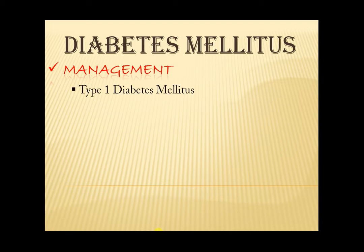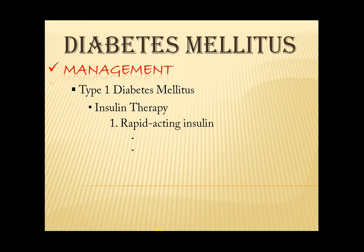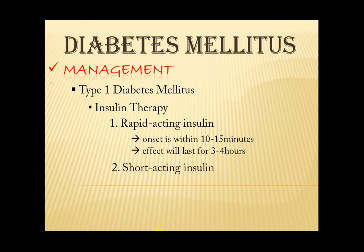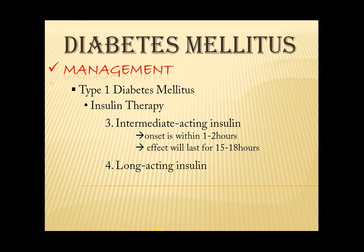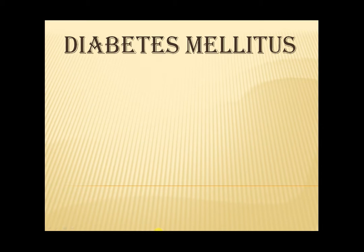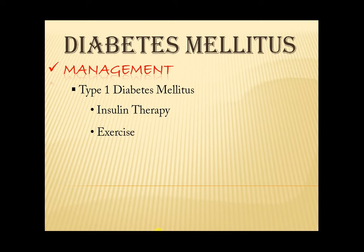Let's now proceed to management. First, for Type 1 diabetes mellitus — since there is not enough or no insulin being produced by the beta cells, the management is mainly insulin therapy. This is to facilitate the entry of glucose into the cells so that it can be used as energy. There are different types of insulin: rapid acting — onset within 10 to 15 minutes, effect lasts 3 to 4 hours; short acting — onset within 30 minutes, effect lasts 6 to 8 hours; intermediate acting — onset within 1 to 2 hours, effect lasts 15 to 18 hours; long acting — onset within 6 to 8 hours, effect lasts 24 to 30 hours. This should be followed by exercise to help reduce glucose in the bloodstream, and lastly a careful meal plan.